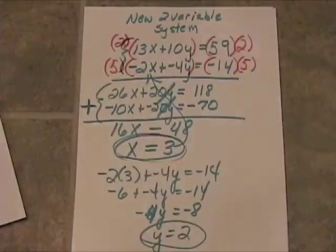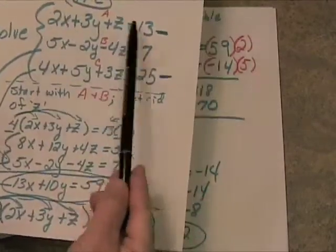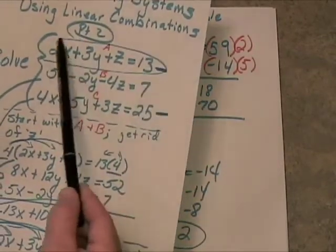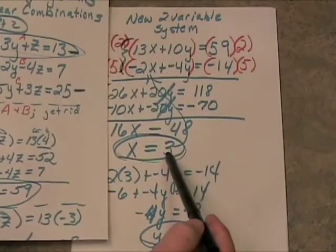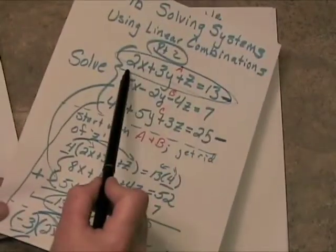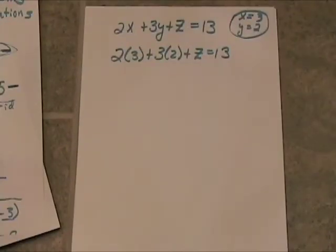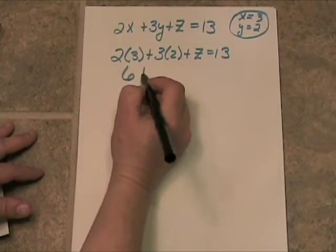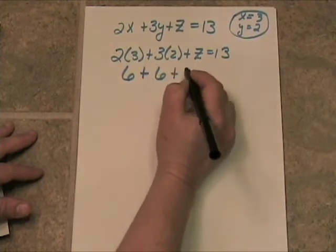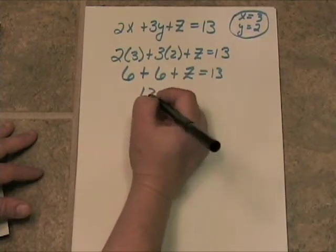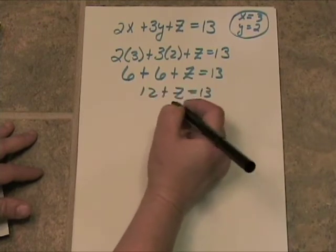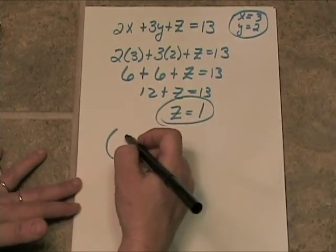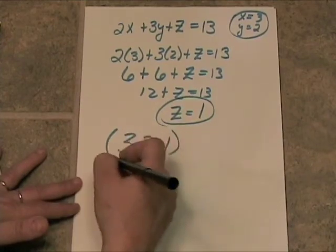Now we have the x and the y. We have to go back to the original system of 3 and pick out which equation is the easiest to work with. I still like the top one, equation A. We're going to plug in x equals 3 and y equals 2 and solve for z. 2 times 3 is 6, plus 3 times 2 is 6, plus z has got to equal 13. So 12 plus some mystery number is 13, which means z equals 1. The ordered triple is 3, 2, 1 — and that's your answer.